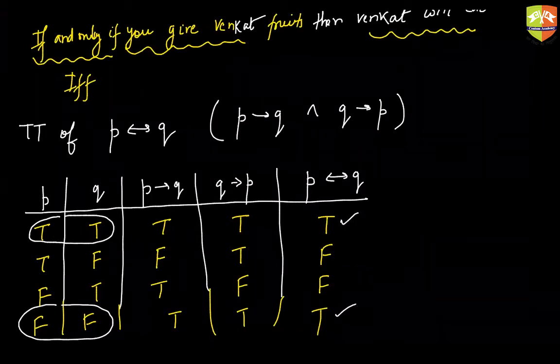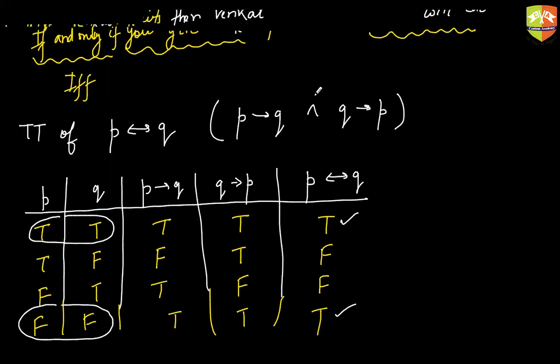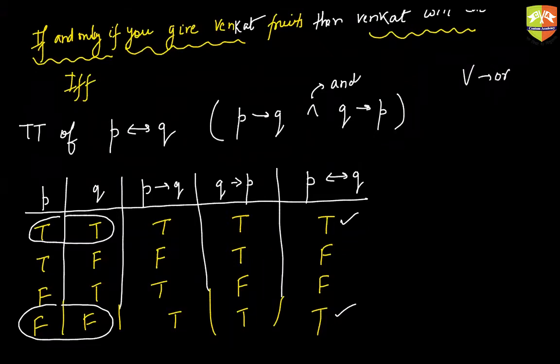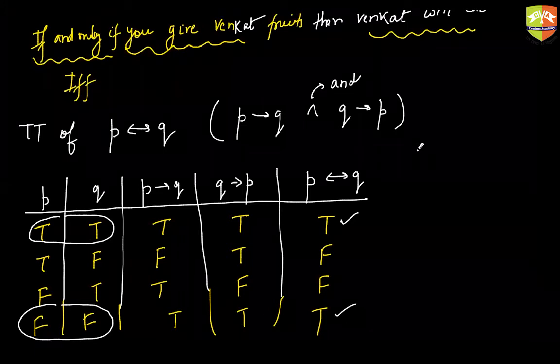What does it mean? Unless both the component statements are true or both the component statements are false, it will never be true. In OR, false and false gave false. In AND, false false was also false, but here it is giving true. So basically when I say if Venkat is given a fruit then he will eat, logically you were saying if Venkat is not given a fruit he will not eat.